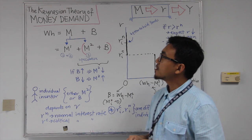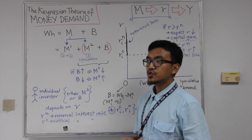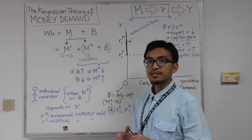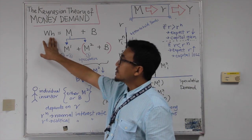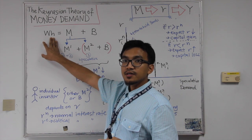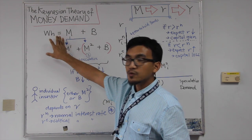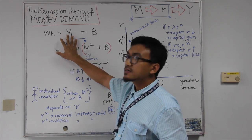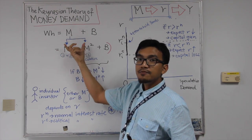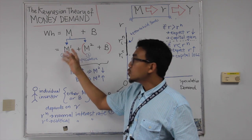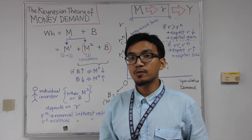Let's have a look at the third reason for money demand, which will explain the negative relationship between interest rate and the demand for money. The financial wealth of a household — the portfolio of financial wealth — can either be in terms of money or bonds. M can be further divided into M1 and M2 based on the reasons why a household would like to hold money.